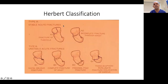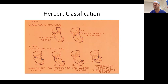Herbert classification briefly: Type A is a stable or incomplete fracture — A1 is a tubercle fracture, A2 is an incomplete waist fracture. Type B starts from displaced distal pole, displaced waist, proximal pole, and transcaphoid perilunate injury; B5 is a comminuted scaphoid. Type C is delayed union. Type D is nonunion.